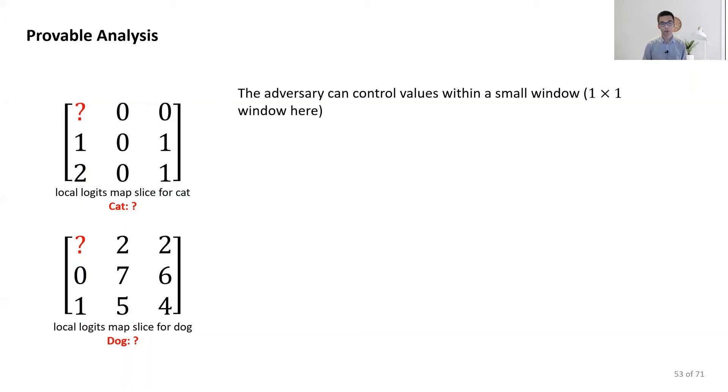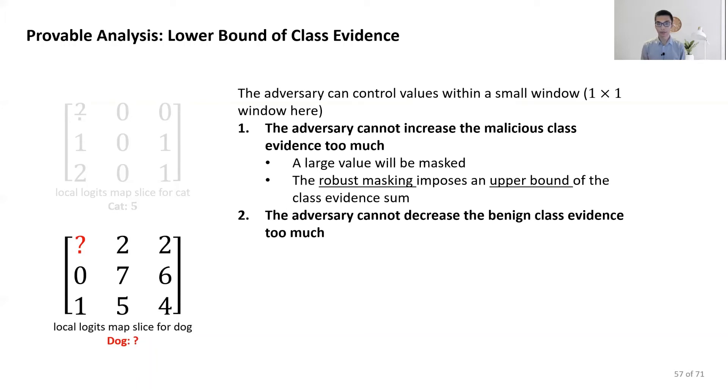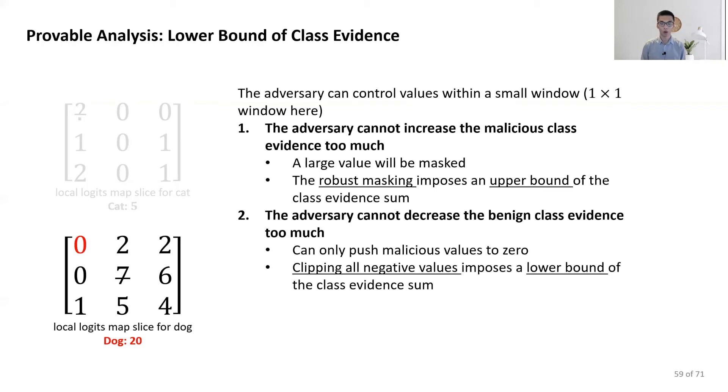We can have two claims here. First, the adversary cannot increase the malicious class evidence too much because our large values will be masked and we will have an upper bound for each class evidence sum. Second, the adversary cannot decrease the benign class evidence too much because we clip all negative values to zero and pushing them to zero is the best an attacker can do. Then, we will have a lower bound.